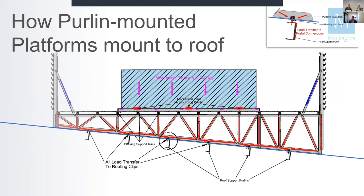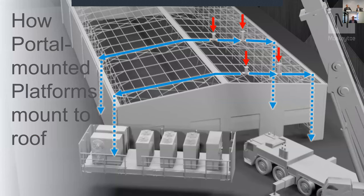The platform has to be fixed to the roof in one of two ways. One's a purlin-mounted option — this shows how those loads are transferred back through to the purlins, whether it's wind loads from the screens or the actual plant equipment on the platform transferring all the way back through to the purlins. The other is the portal-mounted option, where the load goes back through the main building structure — the portals.